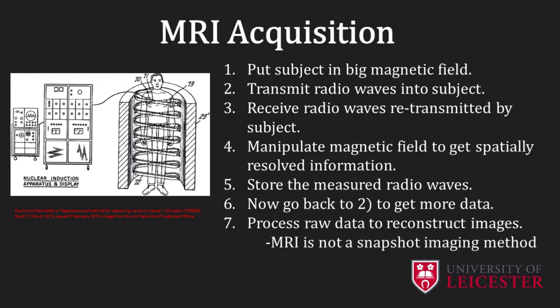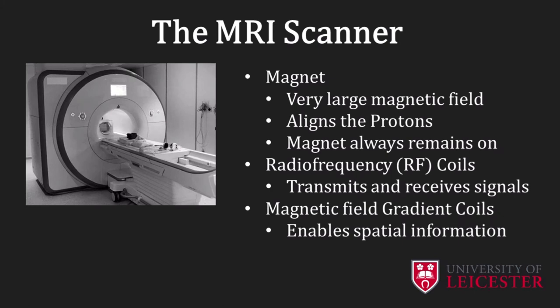MRI is not a snapshot imaging method. To obtain good quality images, it is necessary for the subject in the scanner to remain stationary during the entire data acquisition procedure, which can take several minutes. The MRI scanner consists mainly of a very large magnet. In clinical MRI, the large magnet is usually a superconducting magnet that produces magnetic fields typically of one and a half tesla or three tesla, approximately 60,000 times stronger than the earth's magnetic field. The superconducting magnet is always on even when the scanner is not being used, and this has safety implications.